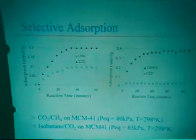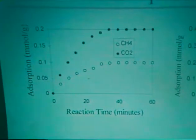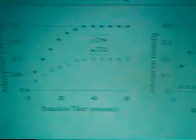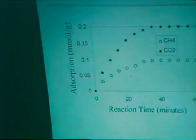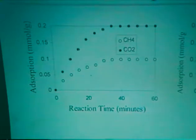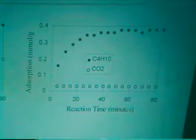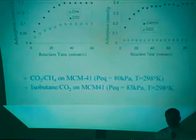We've done some selective adsorption work using gas chromatography mass spectrometry. The graph on the left shows CO2/CH4 adsorption on MCM-41 — as you can see, MCM-41 is selective for CO2. On the right is a graph of the adsorption for isobutane and CO2 on MCM-41, where the selectivity has been reversed. We think this is probably because isobutane has more branched methyl groups than methane, and could therefore interact with more van der Waals pore-wall sites and bind more strongly to the surface.